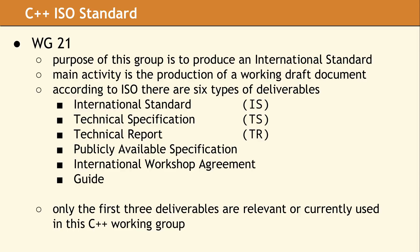The IS, or international standard, is the most common document C++ developers refer to when programming. When someone mentions the C++ standard, what they are actually referring to is an approved IS document. Since C++20 has not been approved as of yet, it is not an official international standard. There is currently a working draft, but until it has been approved by ISO, the contents are subject to change.